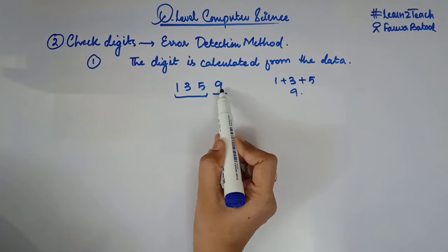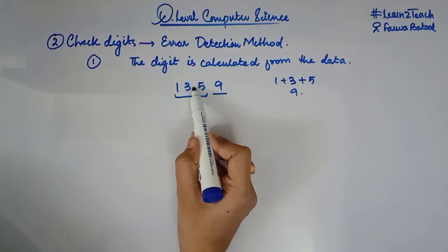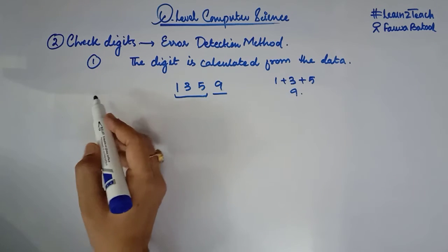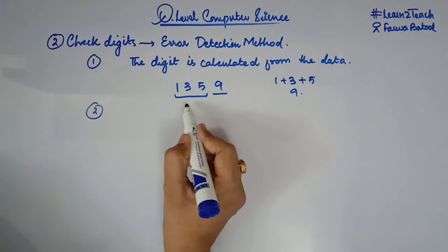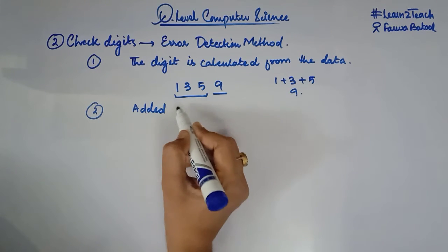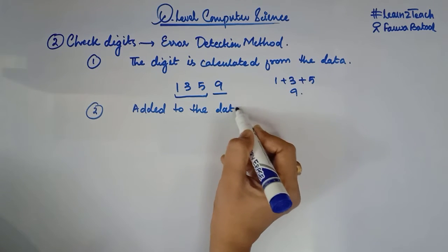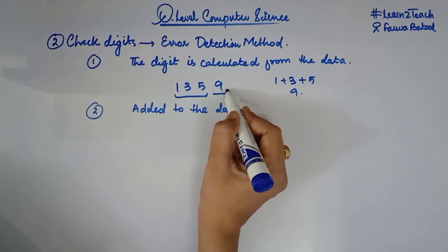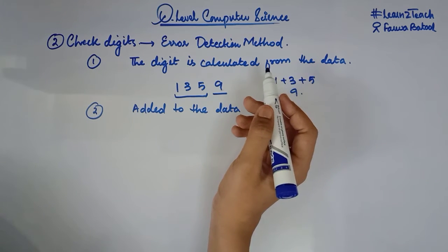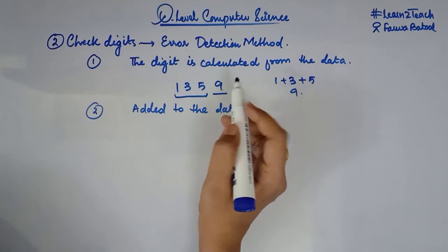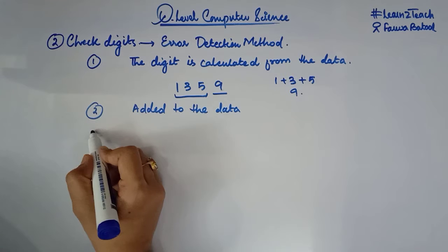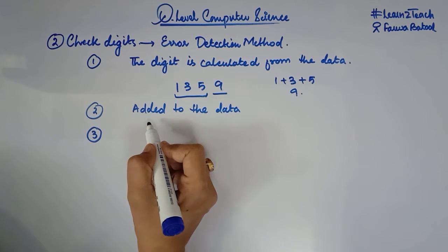This check digit tells us whether the data that has been transmitted or entered is correct or not. The second point is that the check digit is appended or added to the data. When you are entering or transmitting the data, you add this digit as well — it is written at the end of your data digits.